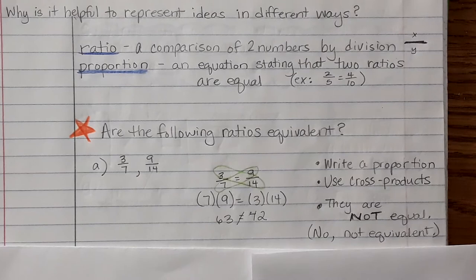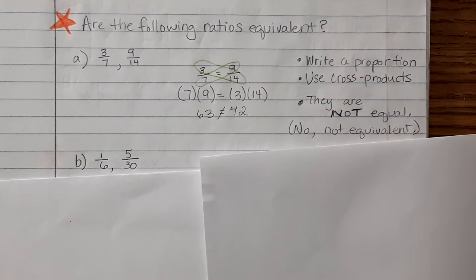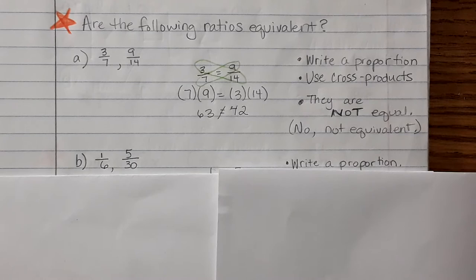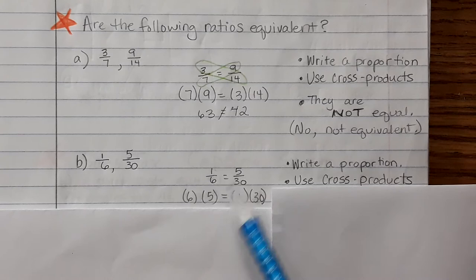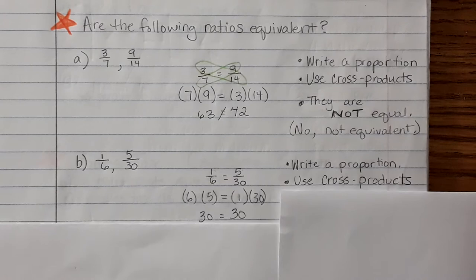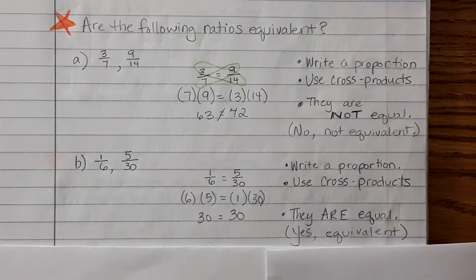Let's try another example, example B. So following the same steps we need to write a proportion. We're gonna write 1 over 6 equals 5 over 30. Then we want to use cross products. So again when we use cross products, 6 times 5, and that equals 1 times 30. And when we multiply, 30 equals 30, that is true, they are equal, so therefore yes they are equivalent.